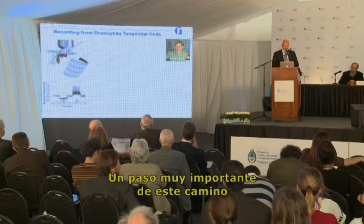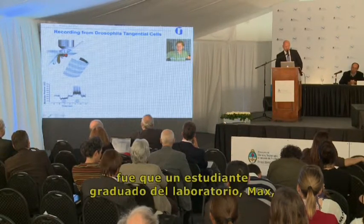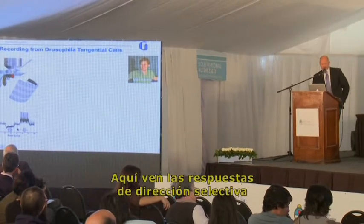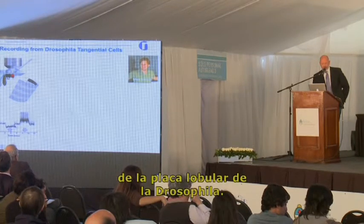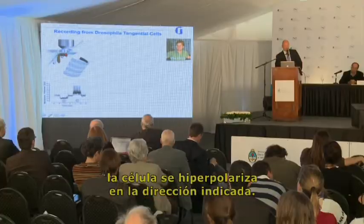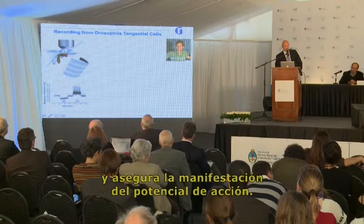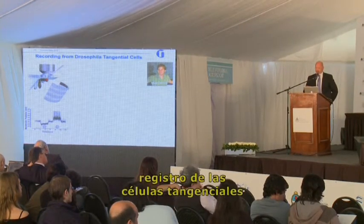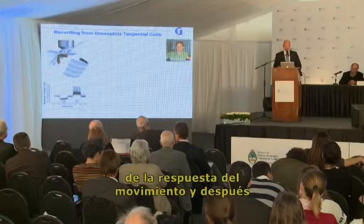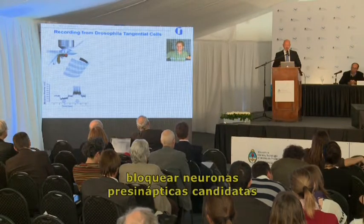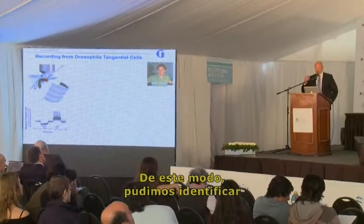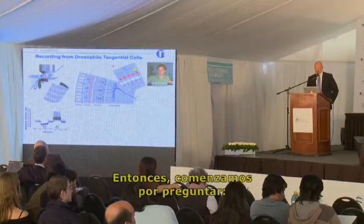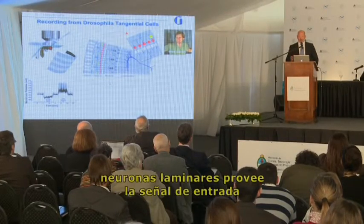A critical step was that a grad student in the lab, Maxius, established whole-cell patch recording from tangential cells in Drosophila. You can see the direction-selective response of a vertical-sensitive lobula plate neuron: moving the pattern upward causes hyperpolarization (null direction), while moving it downward causes depolarization and a burst of action potentials (preferred direction). We used this tangential cell recording as our electrophysiological readout of the motion response, then blocked various candidate neurons presynaptic in the optic lobe using Shibire to identify neurons participating in the direction-selective circuit.